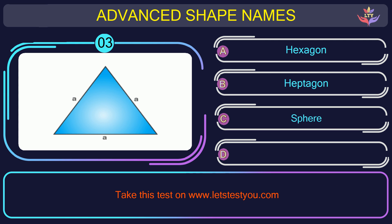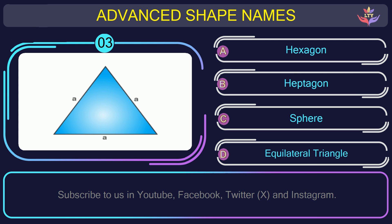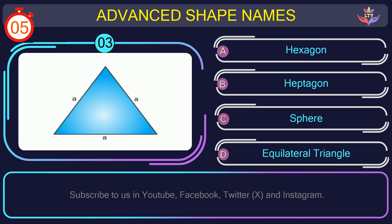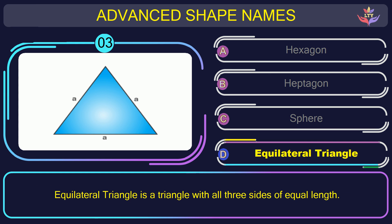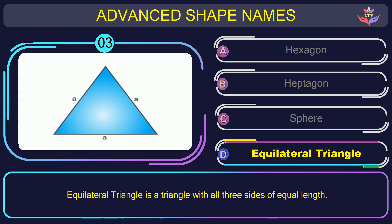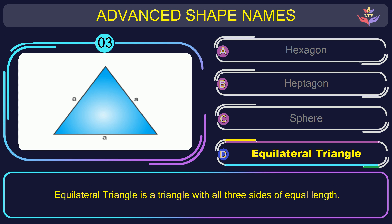Question number three. What is the name of the shape in this picture? The correct answer is option D. Equilateral triangle. Equilateral triangle is a triangle with all three sides of equal length.